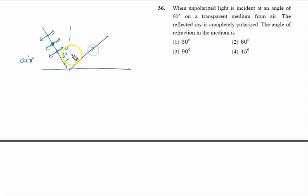The reflected ray will be completely polarized according to Brewster's law. This is possible when the angle between the reflected ray and refracted ray is 90 degrees.